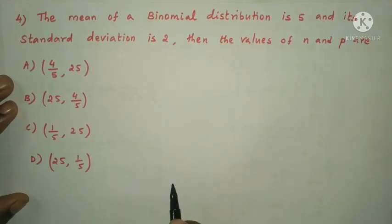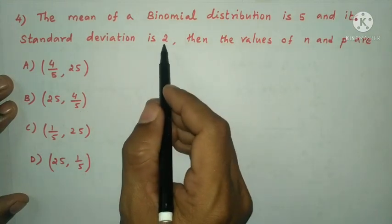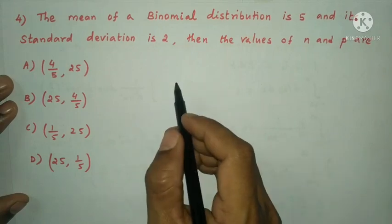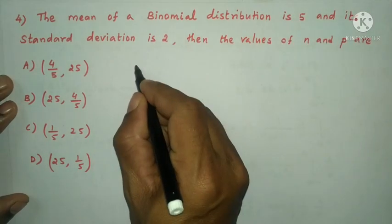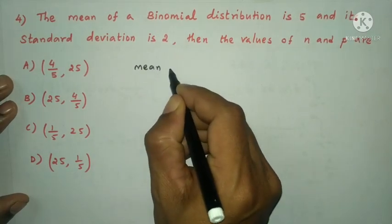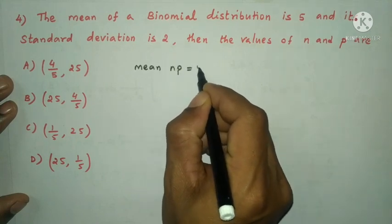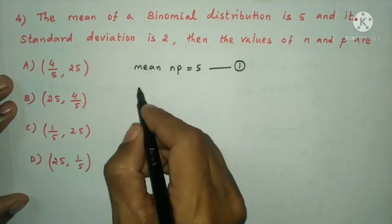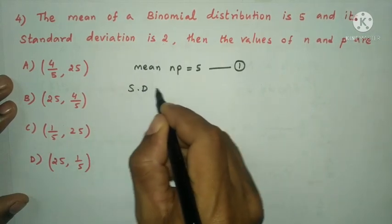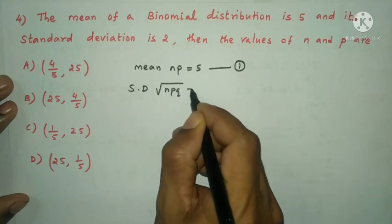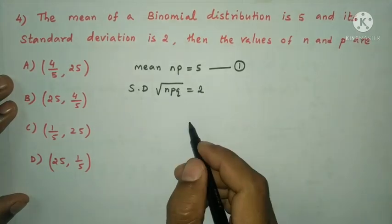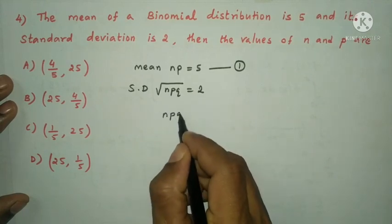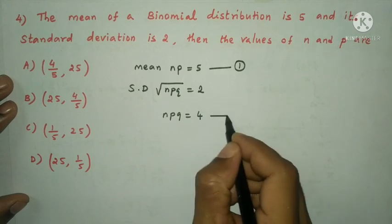Next question: the mean of a binomial distribution is 5 and its standard deviation is 2. Find the values of N and P. For binomial distribution, mean = NP = 5 (equation 1). Standard deviation = √(NPQ) = 2, so squaring both sides: NPQ = 4 (equation 2).